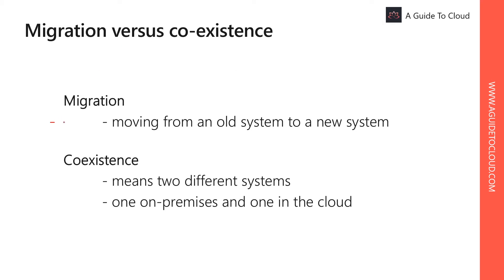Migration is moving everything from your old system to a new system with the intent of eventually removing the old system. In the context of cloud deployment, you move your data and applications from local resources up into the cloud infrastructure provided by your cloud service provider. Coexistence means two different systems — one on-prem and one in the cloud — connect and work together at the same time, or coexist as a single service such as email.